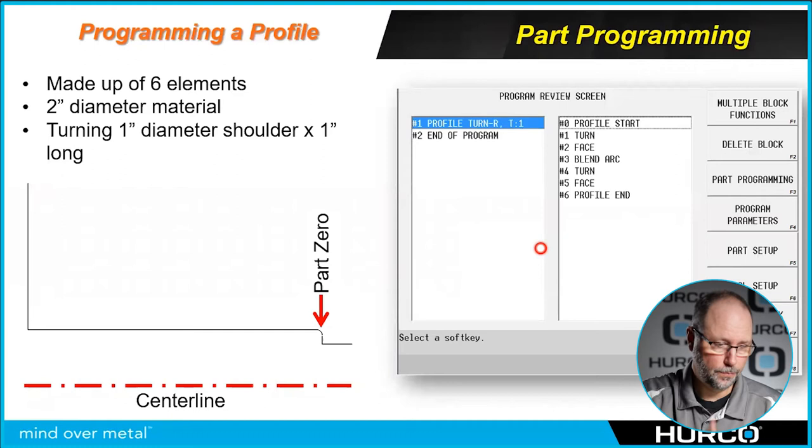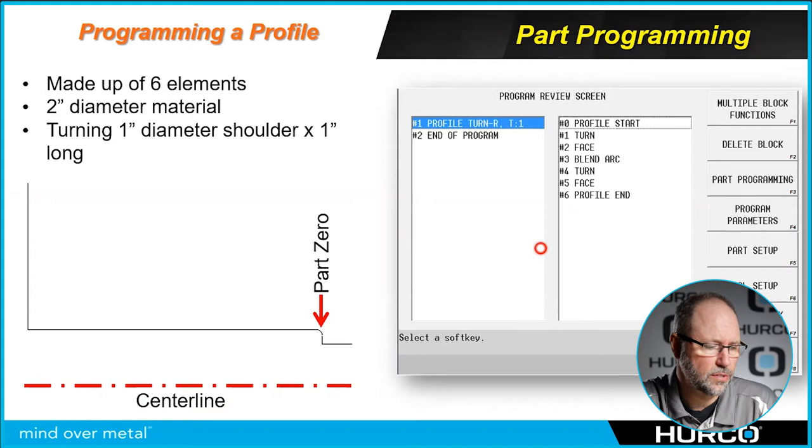Let's go ahead and start walking through how we would program this. This little turn, we're going to make up with six different elements. You can see that the face of the part is our part zero, not the back against the chuck, but the face of the material that's sticking out. We're going to do a one inch diameter turn, one inch back out of a two inch piece of material.